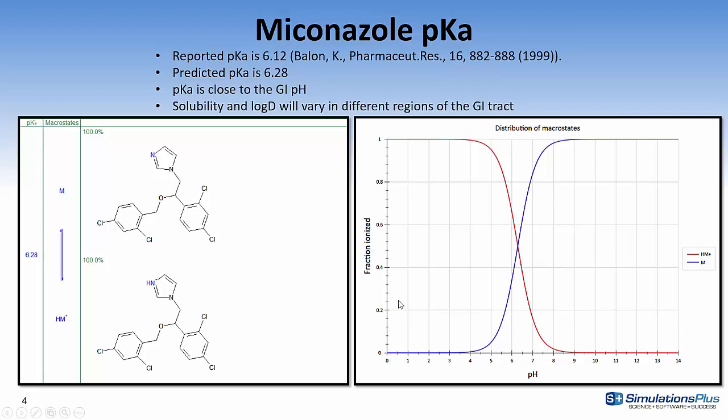If we start at very low pH most or all of the compound is in the protonated form and then as you increase the pH to right around four this microstate starts decreasing and the other one starts coming up for the neutral state. Then when you get to the pKa of the compound 6.28 these lines cross and as you increase the pH then the neutral state becomes more predominant.